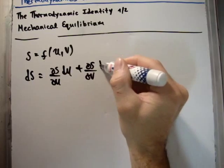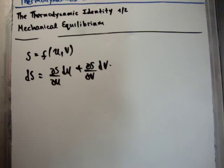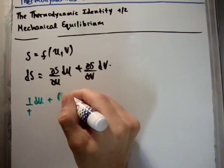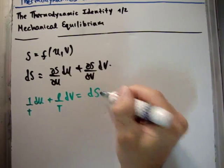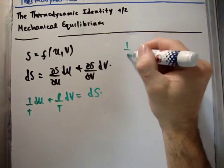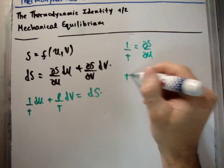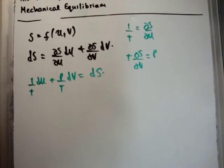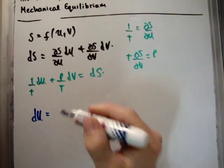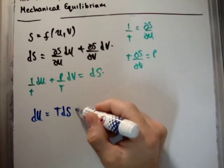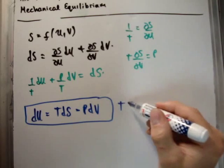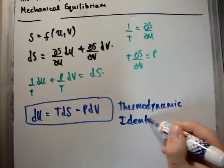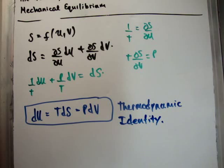We can substitute in for these partial derivatives using our two identities — 1/T = ∂S/∂U and P/T = ∂S/∂V — giving us dS = (1/T)dU + (P/T)dV. Rearranging, the thermodynamic identity is: the infinitesimal change in internal energy equals temperature times the change in entropy minus pressure times the change in volume: dU = T dS − P dV. This is the thermodynamic identity for mechanical equilibrium.